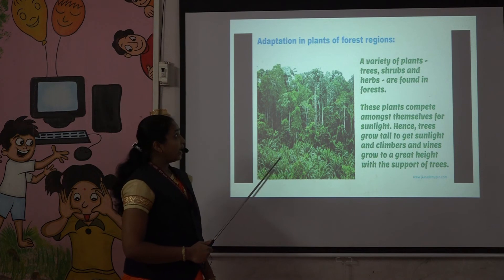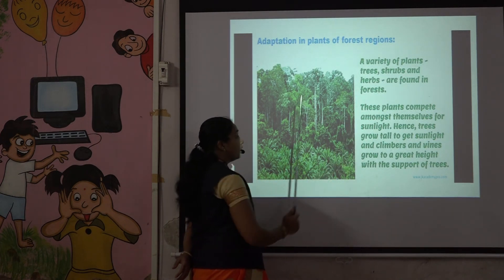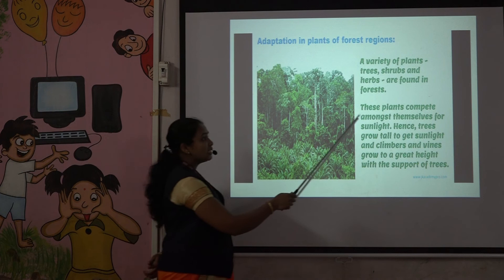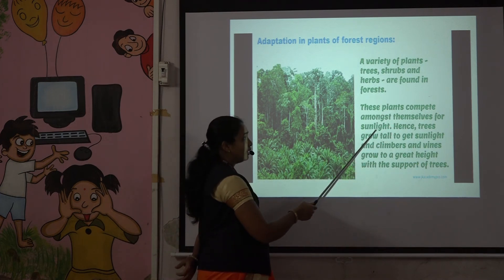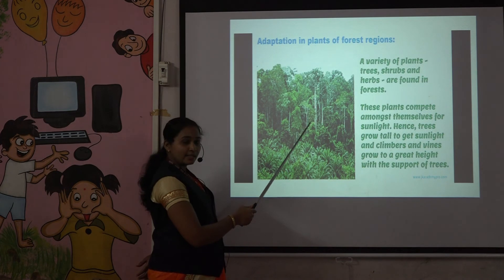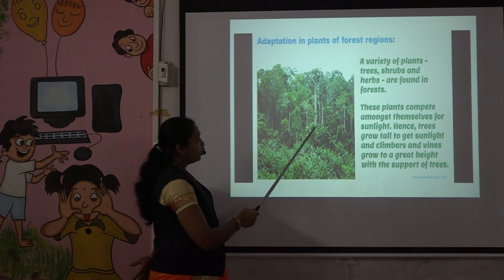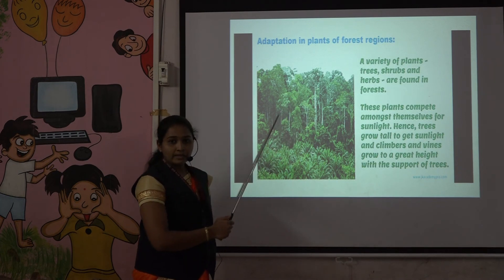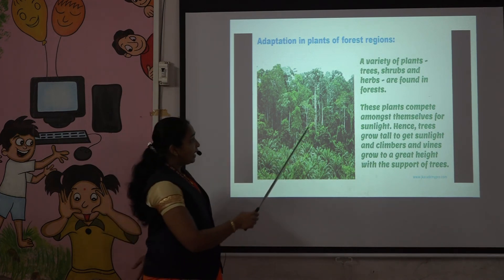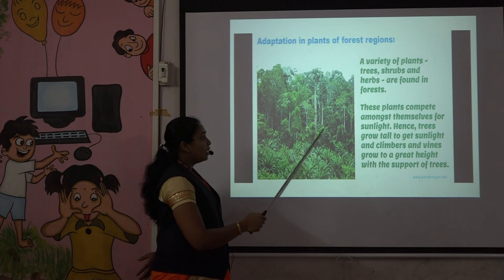Now let's talk about adaptation in plants of forest regions. We see a variety of plants like trees, shrubs, herbs, weeds, and climbers. These plants compete among themselves for sunlight. If one plant is tall and another is short, the short plant also grows tall to get sunlight. Climbers and weeds take support of other plants and grow tall. Small spring-like tendrils are seen on climbers, which take support of trees.